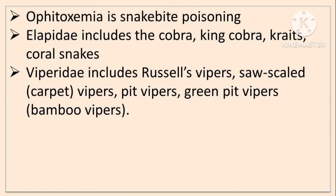Vipers are categorized into two groups: Pit Viper and Pitless Viper. The pit is a depression between the eyes and nostrils. Russell Viper and Saw-Scale Viper are Pitless Vipers, while Green Pit Viper and Bamboo Viper are Pit Vipers.